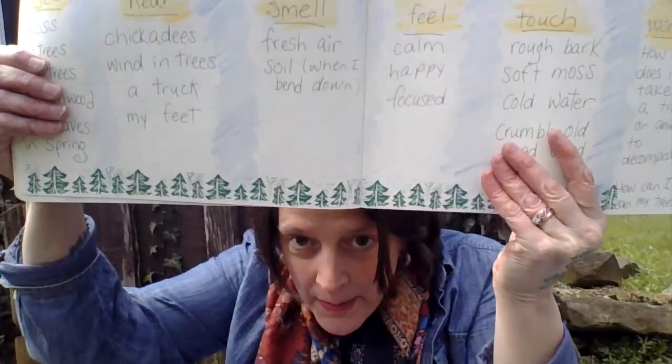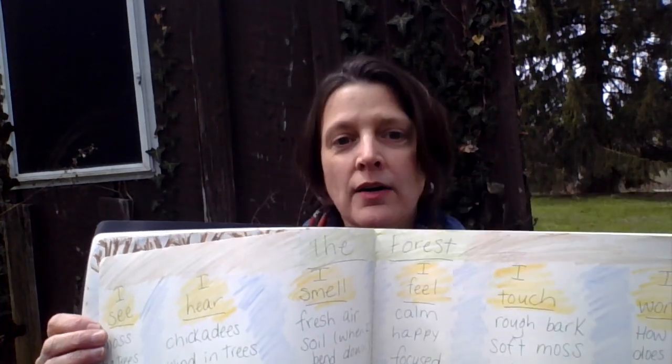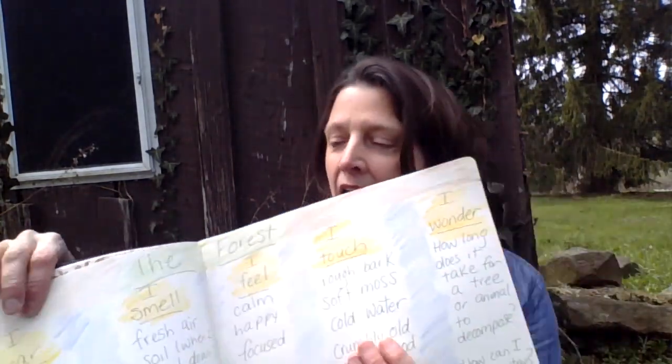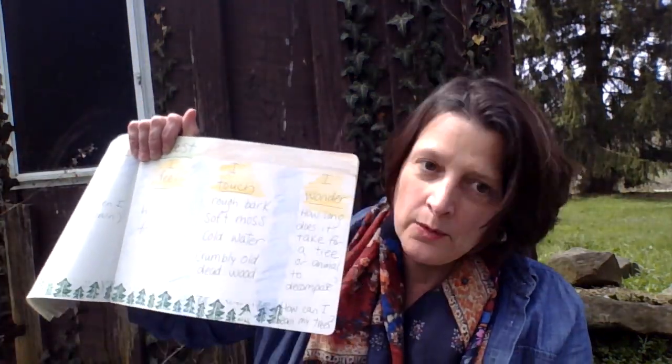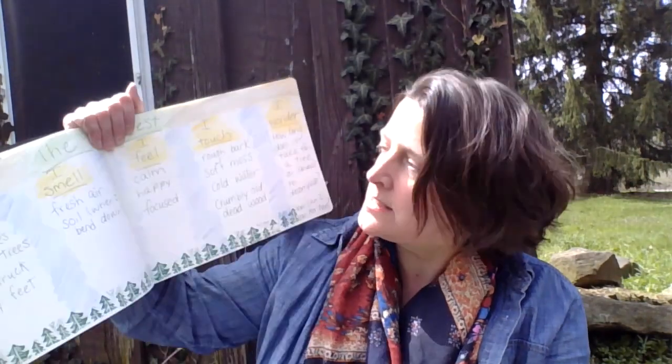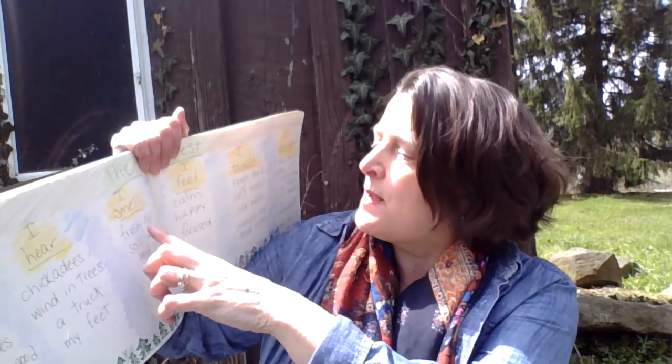This last thing I did was take a whole double-page spread where I wrote across the top 'the forest,' and I wrote all of these different senses: I see, I hear, I smell, I feel, I touch, I wonder. I did not write I taste because I'm not going to be eating things in the forest. So — I see: moss, big trees, small trees, holes, and wood. I hear: chickadees, wind in trees, a truck, my feet. I smell: fresh air and soil when I bend down.